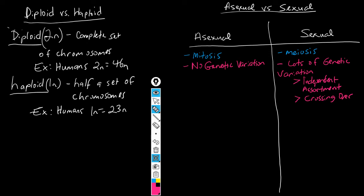Those are two things that happen in meiosis that result in lots of genetic variation. When you see meiosis, look at that 'ME' — think of 'me' as in you. That's how you were formed: by sexual reproduction. Think of your friends, brothers, sisters, or other students at Apex Friendship High School — they were all produced by sexual processes, which is why there is so much diversity in our school and community.